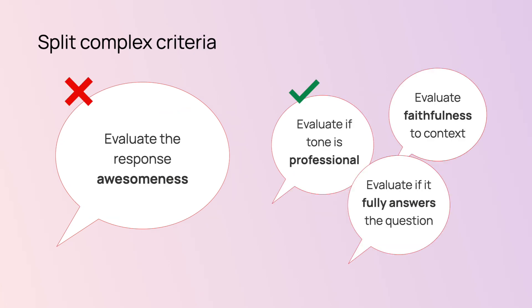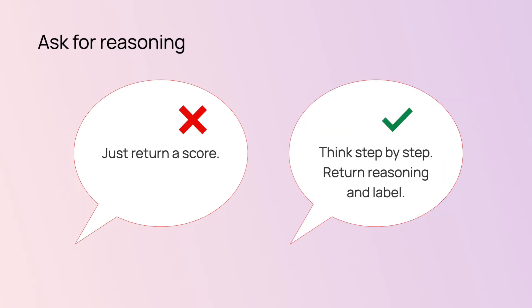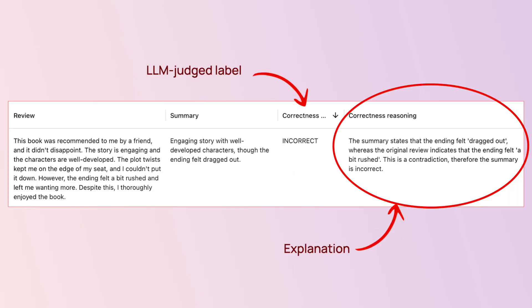Next, split complex criteria. Don't just ask an LLM to classify responses into good and bad. Chances are your definition of 'good' means multiple things — is the response complete? Is it factually correct? Does it sound professional? That's three separate criteria, and you can have three separate evaluators. You will get better results this way. Third, ask for explanations — this is known as the chain of thought approach. The simplest way is to ask the LLM to think step by step before giving the answer. This helps improve accuracy and is also super useful for troubleshooting, like pointing you to a specific contradiction that the LLM picked up.